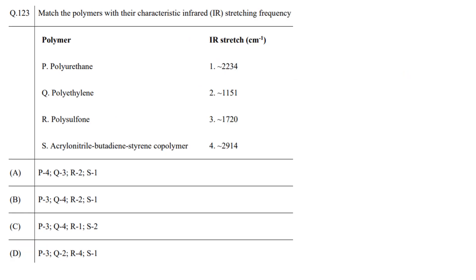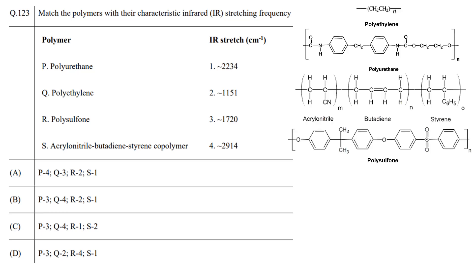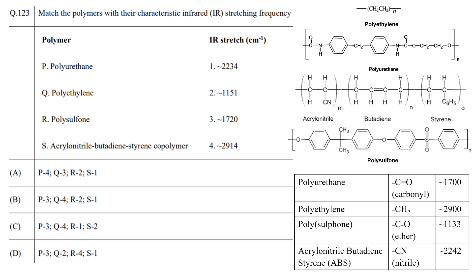In this question, match the polymers with their IR stretching frequencies. IR spectroscopy measures the vibration of atoms, making it possible to determine functional groups. Polyethylene gives a peak around 2900 cm⁻¹ due to CH₂ stretching. ABS copolymer contains a nitrile group and gives a peak around 2200 cm⁻¹. Polyurethane gives a peak around 1725 cm⁻¹ due to the carbonyl group of the amide. Polysulfone gives a peak around 1100 cm⁻¹ due to the carbon-oxygen group. The correct answer is B.